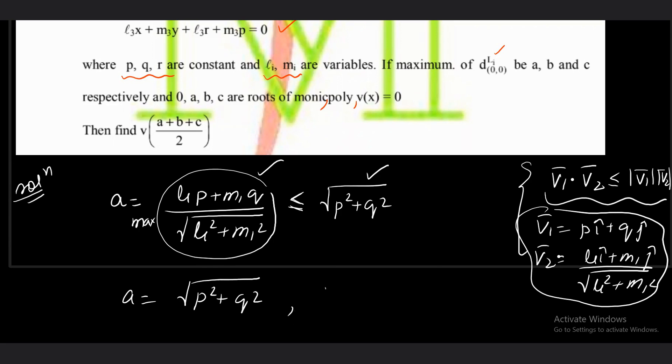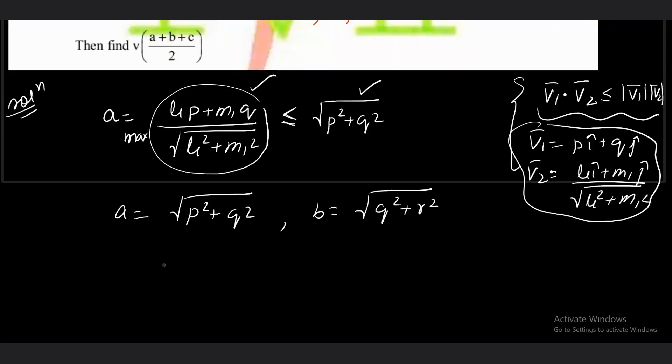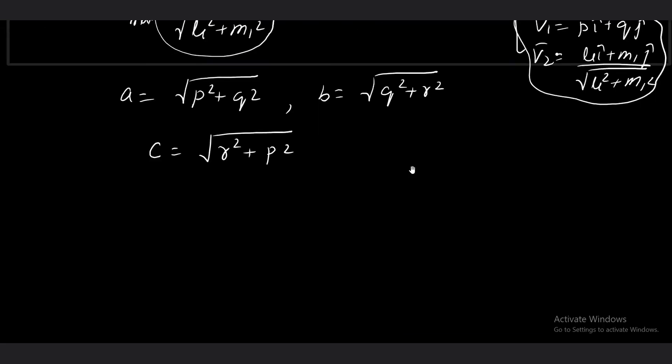Similarly when calculating for b, it turns out to be √(q² + r²). And when solving for c, the maximum distance turns out to be √(r² + p²). So these are our a, b, c values. What I need to calculate is first of all a polynomial having roots 0, a, b, c. And then in that polynomial, if I keep x as (a+b+c)/2, what is going to be the value?